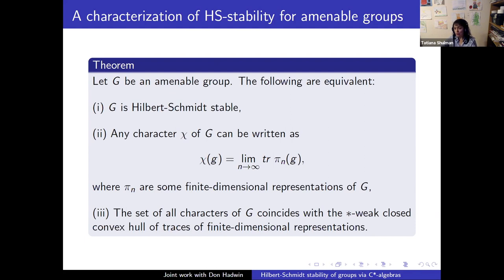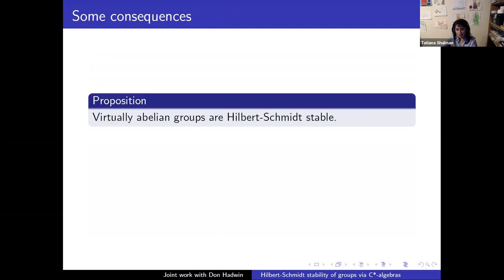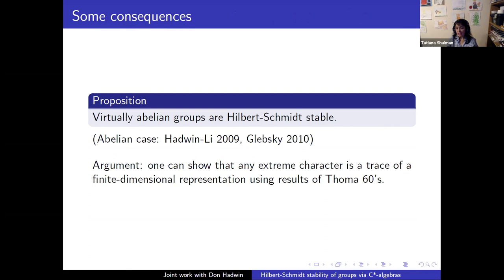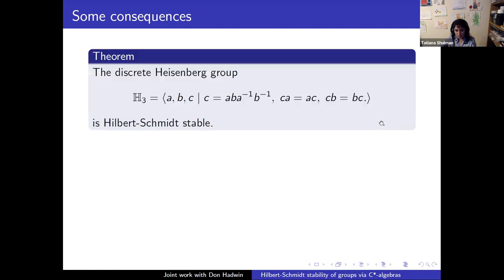As a first consequence, virtually abelian groups are Hilbert-Schmidt stable — for abelian groups this was known from Hadwin-Lee and Levkovsky. In the virtually abelian case, each extreme character is already the trace of a finite dimensional representation, not merely a limit of traces, so by our characterization we get Hilbert-Schmidt stability.